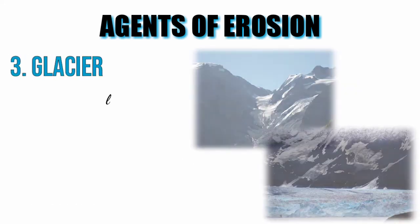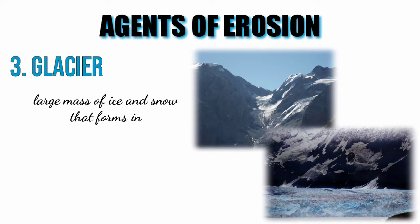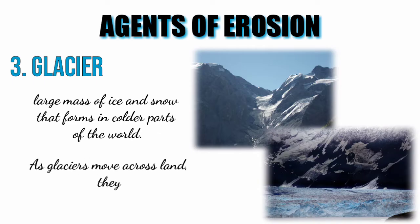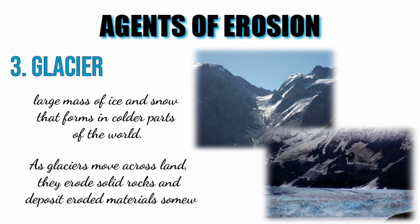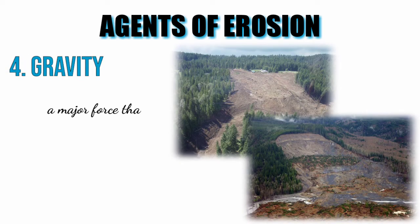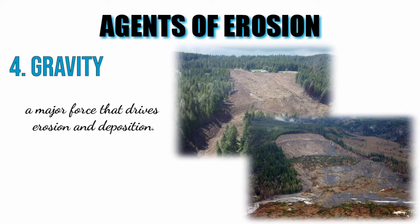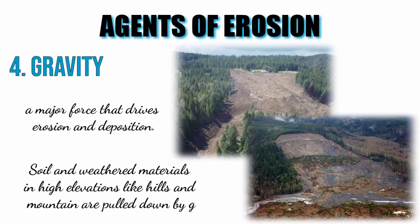Glaciers are large masses of ice and snow that form in colder parts of the world. As glaciers move across land, they erode solid rocks and deposit eroded material somewhere else. Gravity is also a major force that drives erosion and deposition. Soil and weathered materials in high elevations like hills and mountains are pulled down by gravity. Loose rocks on a steep slope may roll downside and deposit materials at the base.